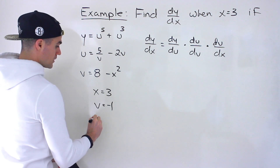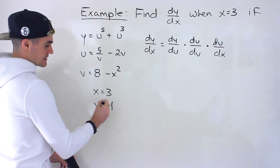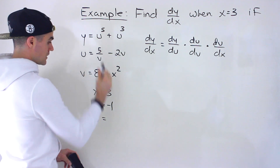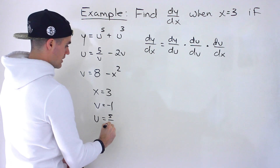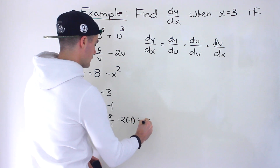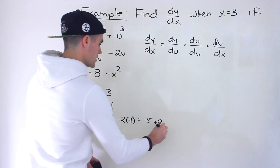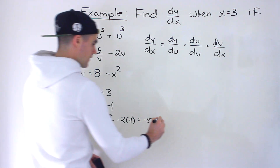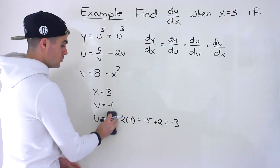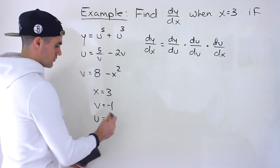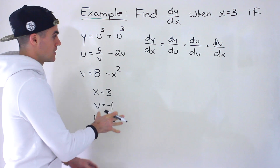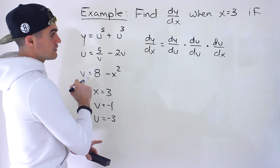Now for u: we take the v value of negative 1 and plug it in. So we have 5 over negative 1 minus 2 times negative 1, which is negative 5 plus 2, giving us negative 3. So for u, we'll be plugging in negative 3. I wanted to get those values first before finding the derivatives.